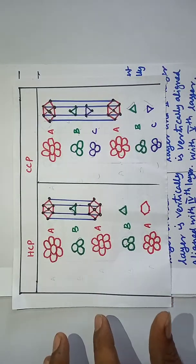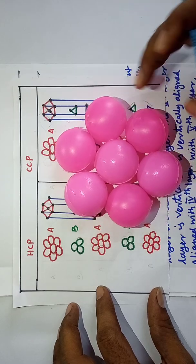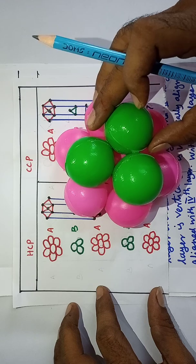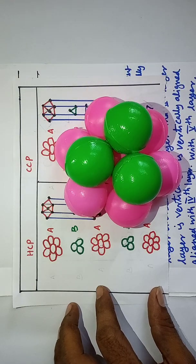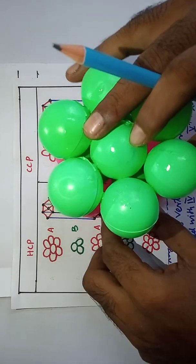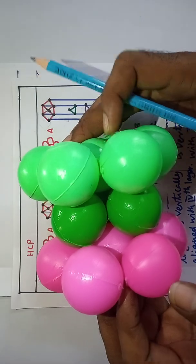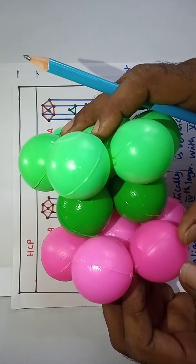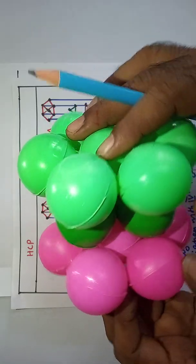Here you can see this is Layer A. This is Layer B, again Layer A. Layer 1 and Layer 3 are the same, and B is different. Layer 1 and 3 are same, and B is different.